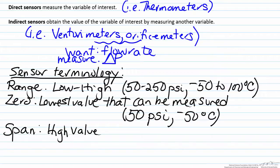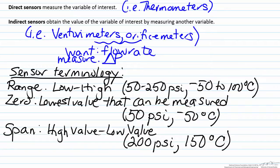The span represents the magnitude of the high value minus the low value. So in the case of what we have here, going from 50 to 250 psi, the span would be 200 psi, and for the temperature sensor going from negative 50 to 100 degrees Celsius, this would be a span of 150 degrees Celsius.